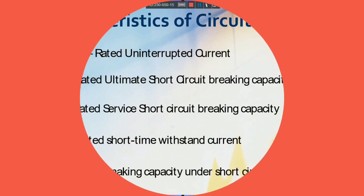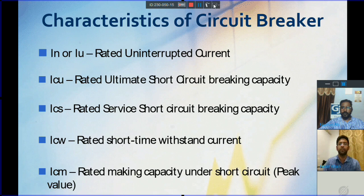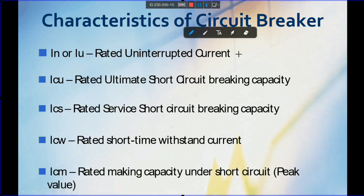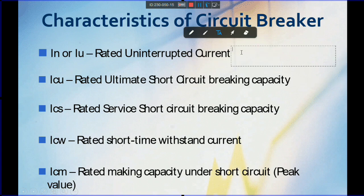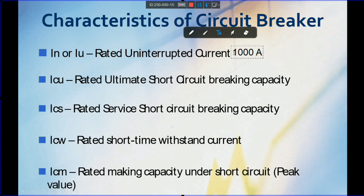Last time we discussed the first parameter: INR, the rated uninterrupted current. For example, if we consider an ACB rated at 1000 amps, the rated current of the breaker is 1000 amps. This means the breaker is designed to operate under this current — that is the continuous current carrying capacity of the breaker, which is called the rated current. For 24/7 operation, we can supply up to 1000 amps to this breaker.